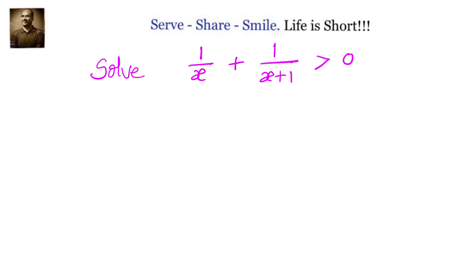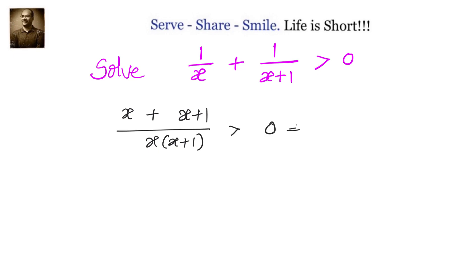Now how do we solve that? We know that this function becomes undefined whenever x is 0 or x is minus 1. Let us simplify by taking the LCM. We will have (x + x + 1) divided by x(x+1) greater than 0, which gives us (2x + 1) divided by x(x+1) greater than 0.